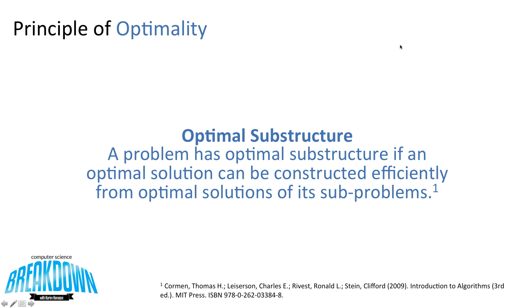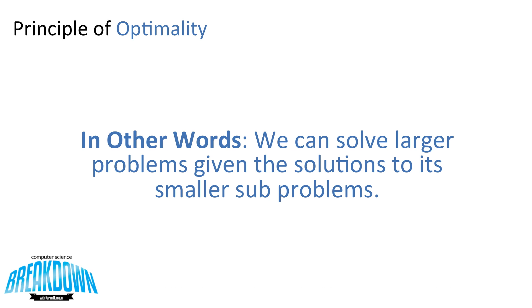The textbook definition is, a problem has optimal substructure if an optimal solution can be constructed efficiently from optimal solutions of its subproblems. In other more layman terms, we can solve larger problems given the solutions to its smaller subproblems.